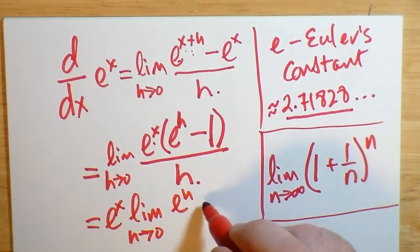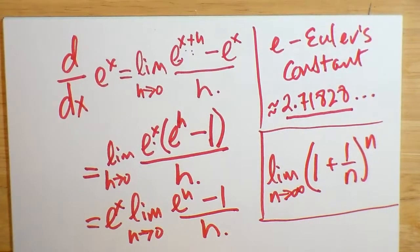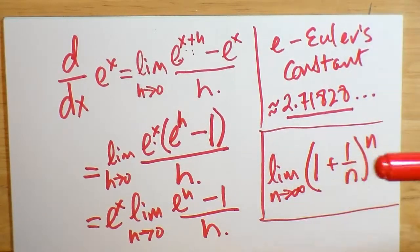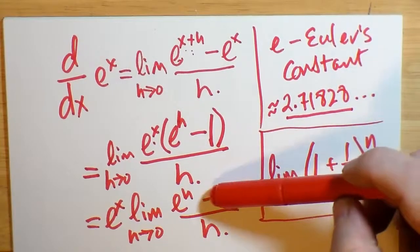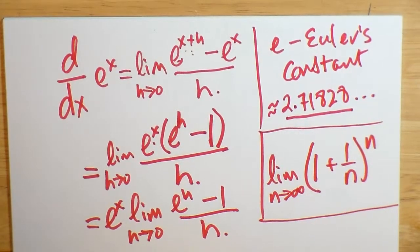This leaves e to the h subtract 1 divided by h, all divided by h. So now the problem is what do we do with this? There doesn't seem to be a way around this particular limit.